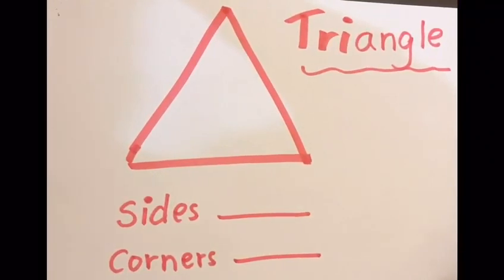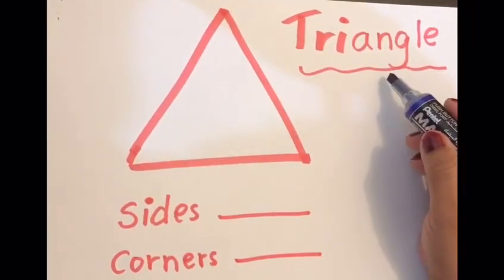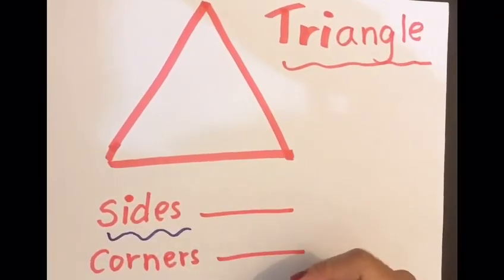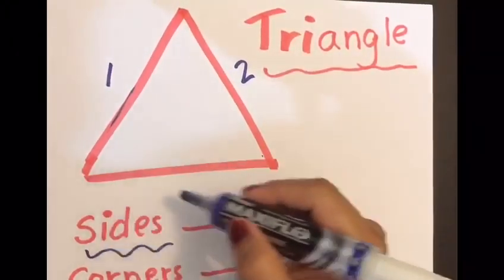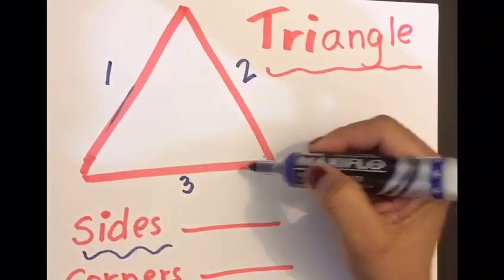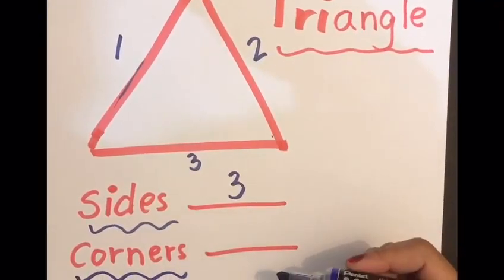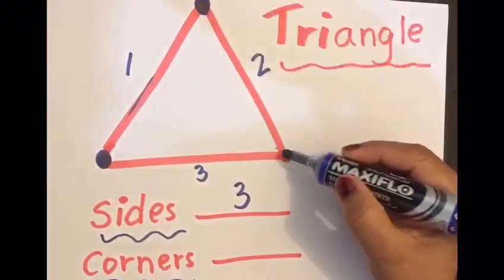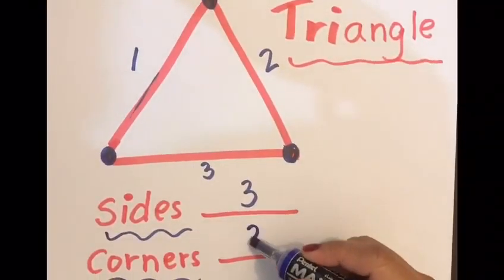Children, let's start some written work. This shape is called a triangle. Now let's count how many sides a triangle has: one, two, and three. So the triangle has one, two, and three sides. And it has one, two, three corners.